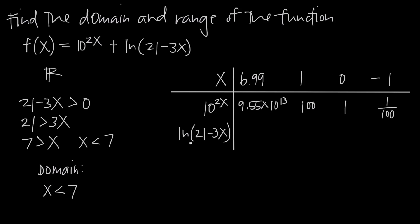Now plugging the same values into natural log of quantity 21 minus 3x: for x equals 6.99, we get 21 minus 20.97 equals 0.03, and natural log of 0.03 is about negative 3.51. For x equals 1, we get 21 minus 3 equals 18, and natural log of 18 is about 2.89. For x equals 0, we get natural log of 21, which is about 3.04. For x equals negative 1, we get 21 minus negative 3 equals 24, and natural log of 24 is approximately 3.18.